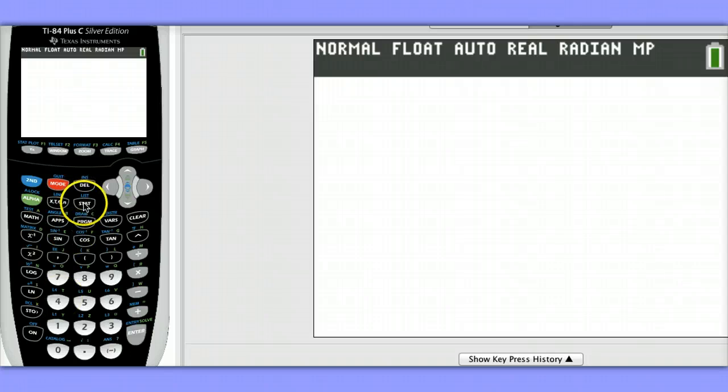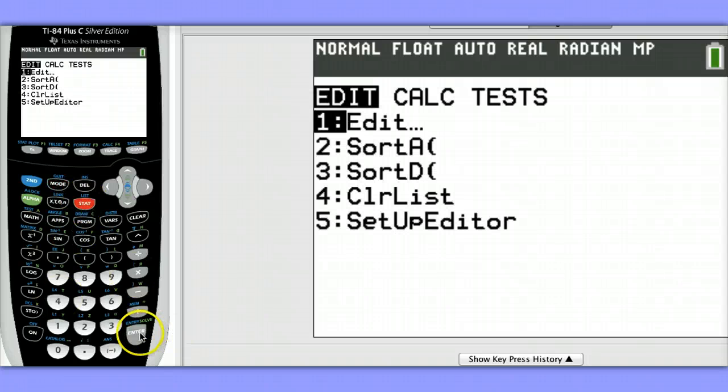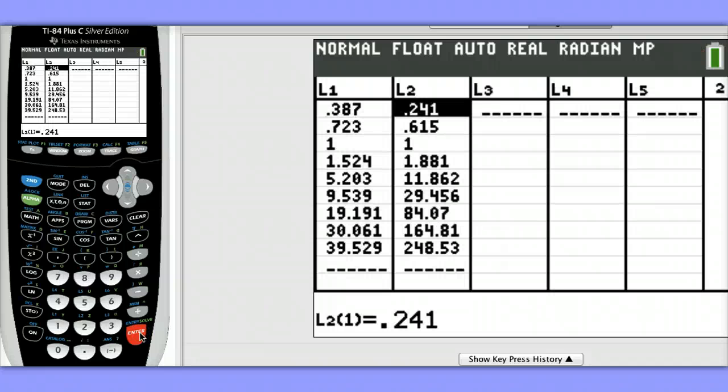To begin, hit STAT and hit Enter on Edit. I've already entered the data in List 1 and List 2 on my calculator. In List 1, we have the distance from the sun in astronomical units. And in List 2, we have the period of revolution in Earth years. Notice the value of 1 here and 1, that's the data for Earth.